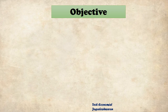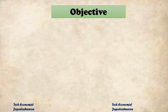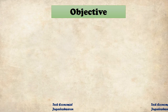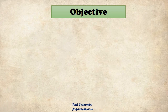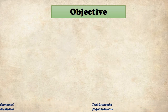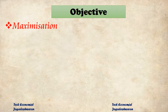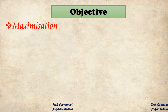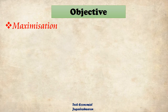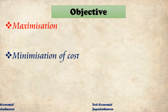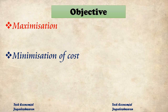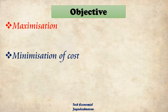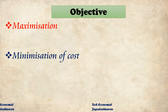Now, what is the main objective of studying production economics or agricultural production economics? Assume you are a business person running an industry. One main goal is maximization of profit — every entrepreneur, CEO, or business person aims to maximize profit. The next objective is minimization of cost, which we will discuss in more detail in future slides.